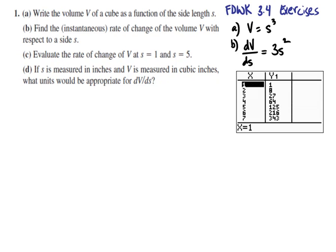For part C, if we wanted to evaluate the rate of change of V at S equals 1 and S equals 5, at S equals 1, we would write it as V prime of 1. However, because the variable is not clear from that, it's probably more clear to write it as dV/dS with a long bar and then as a little subscript at the bottom that says when S equals 1. The rate of change of volume with respect to side when the side length is 1 would just be 3 times 1 squared or 3.